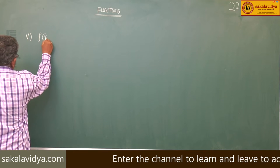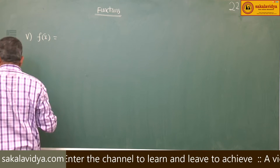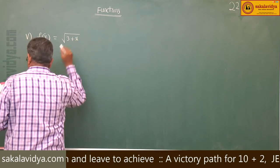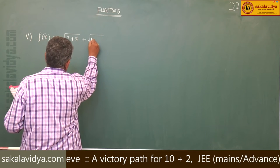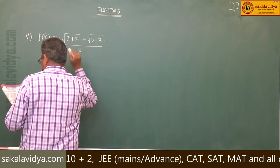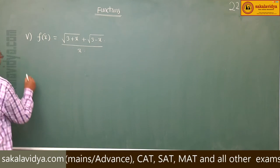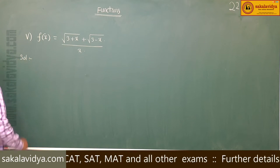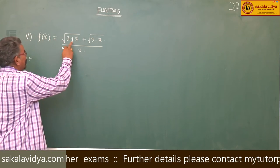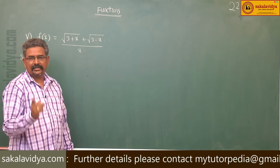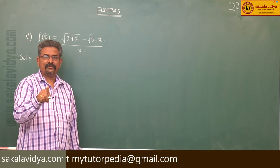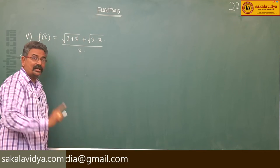Problem 5: f of x is equal to root of 3 plus x plus root of 3 minus x, divided by x. To find the domain of this f of x, 3 plus x must be greater than or equal to 0, 3 minus x must be greater than or equal to 0, but x does not equal to 0.